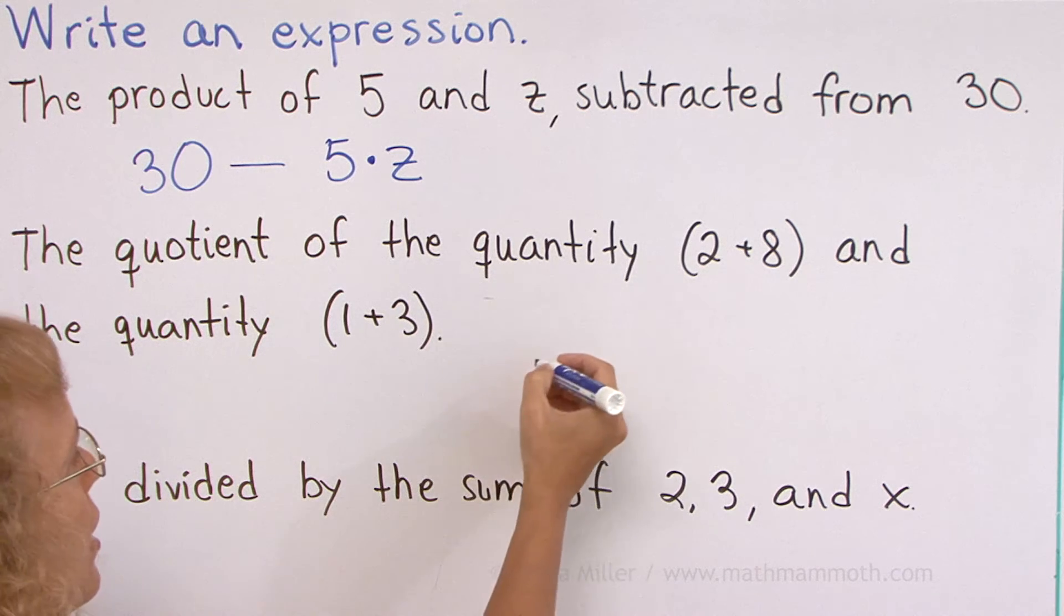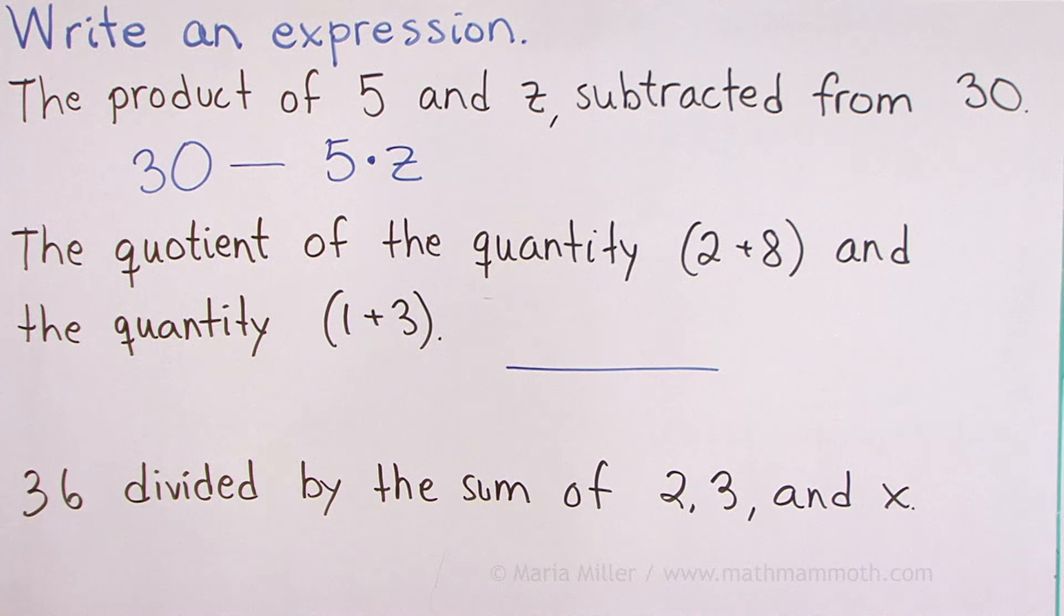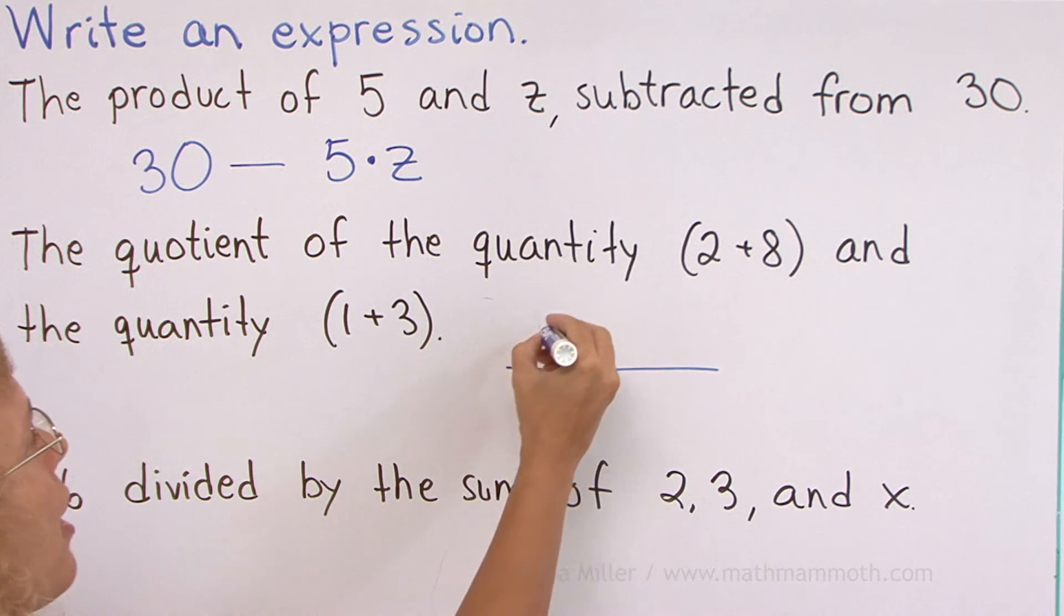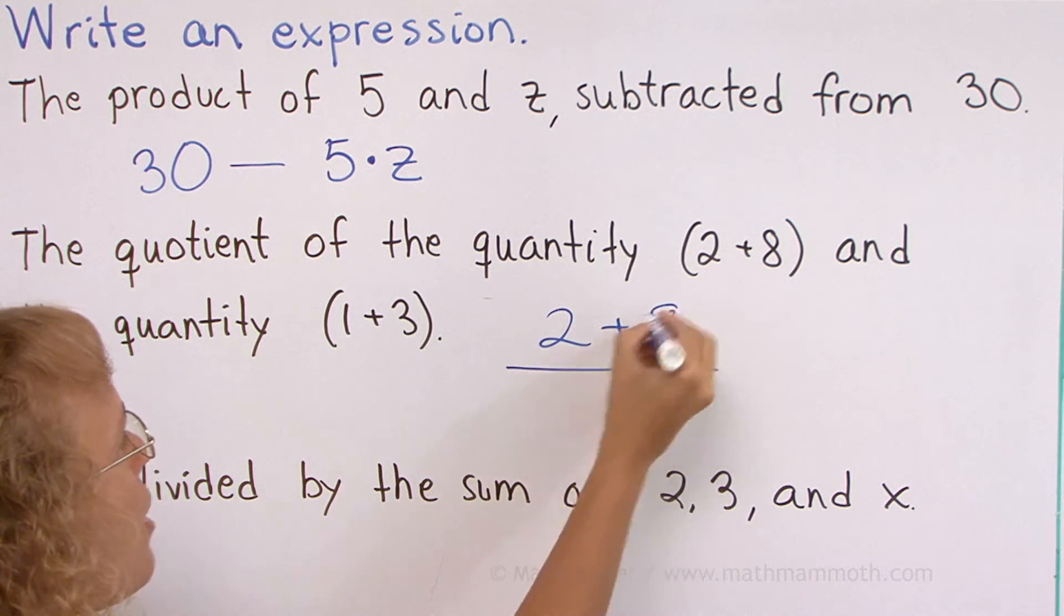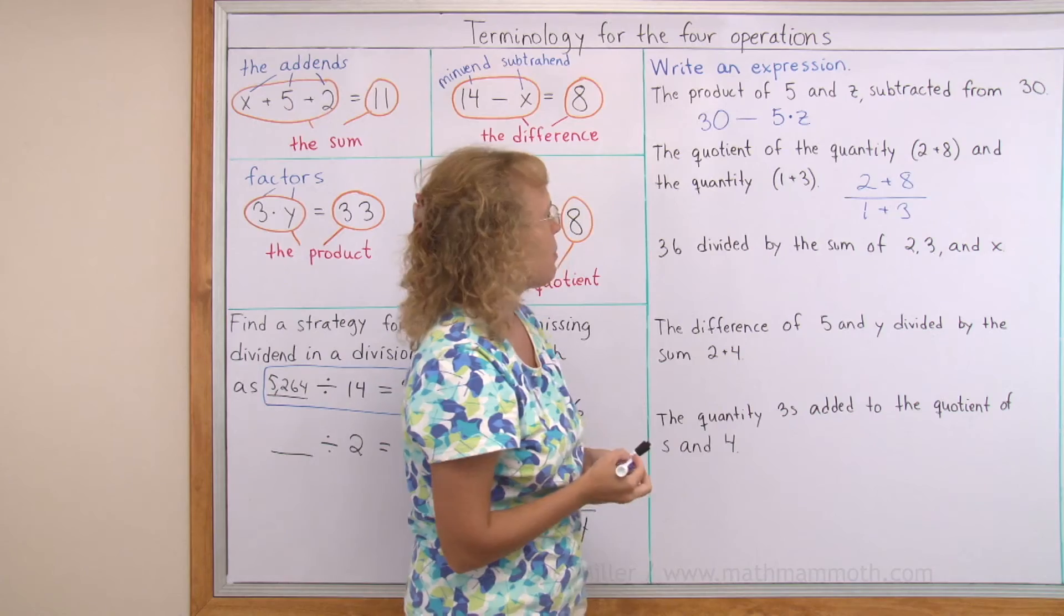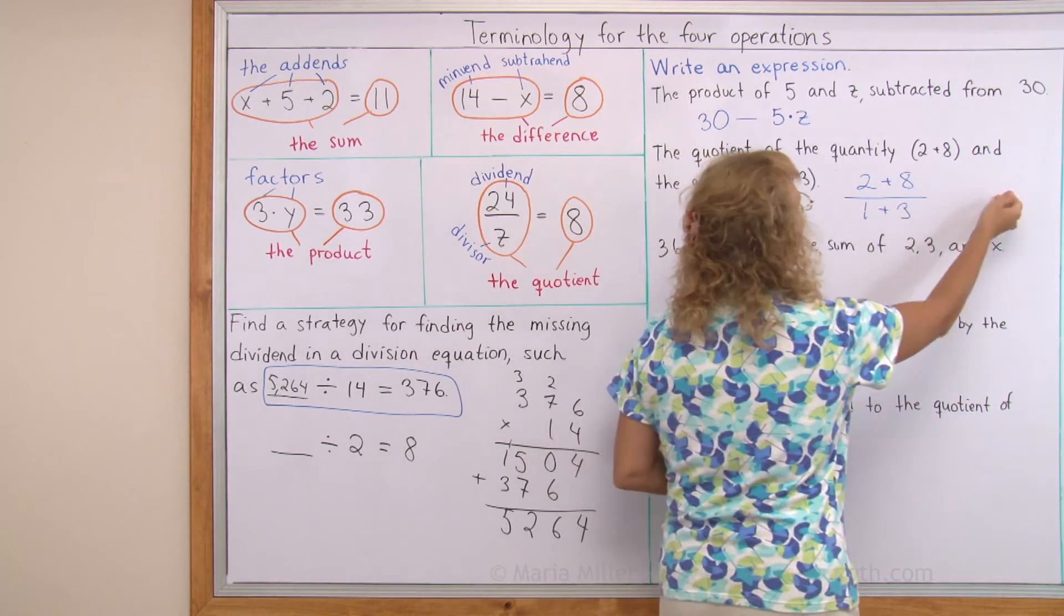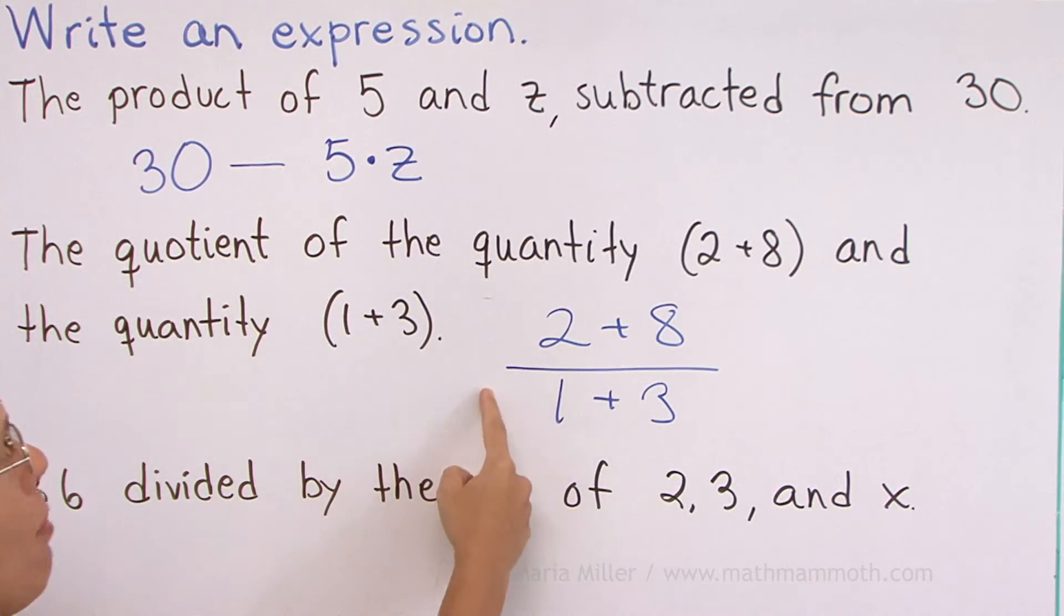And I'm going to use, instead of the division symbol, I'm going to use this fraction line for division. And we divide the quantity 2 plus 8 by the quantity 1 plus 3. Both of them are sums. That's what we were asked to do. Now, I could also calculate or simplify this expression and I would get 10 divided by 4, which is 2 and a half.